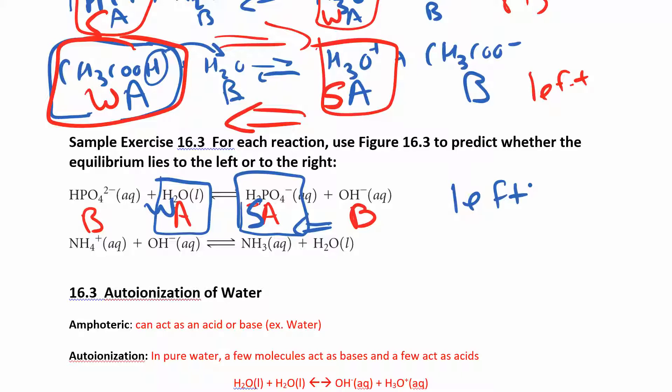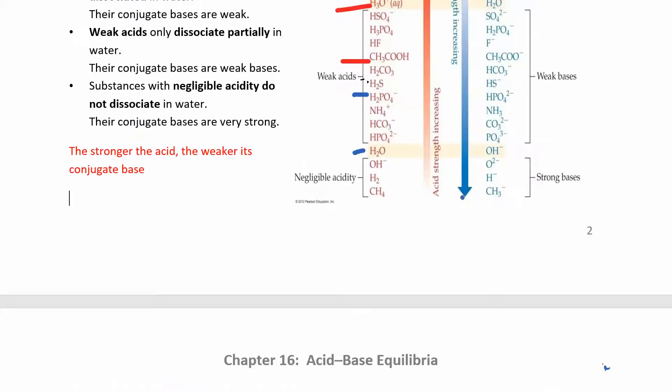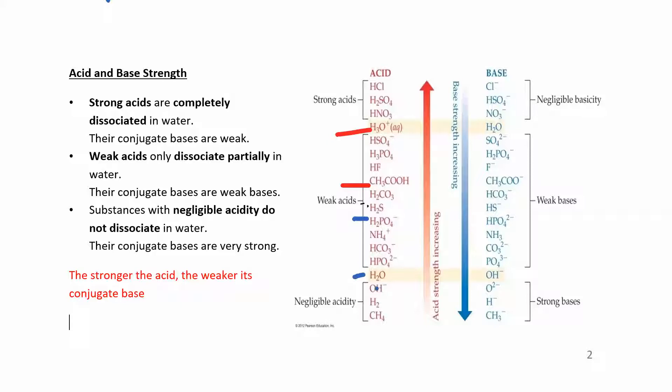That one. And then down here you have NH4 plus and NH3. So this is the acid because it has an extra hydrogen. And this one is the base, which means this is the base and this is the acid. So you're going to compare these acids in the table. Water and NH4 plus. Let's go up here and see water is a fairly weak acid. NH4 plus is right here.